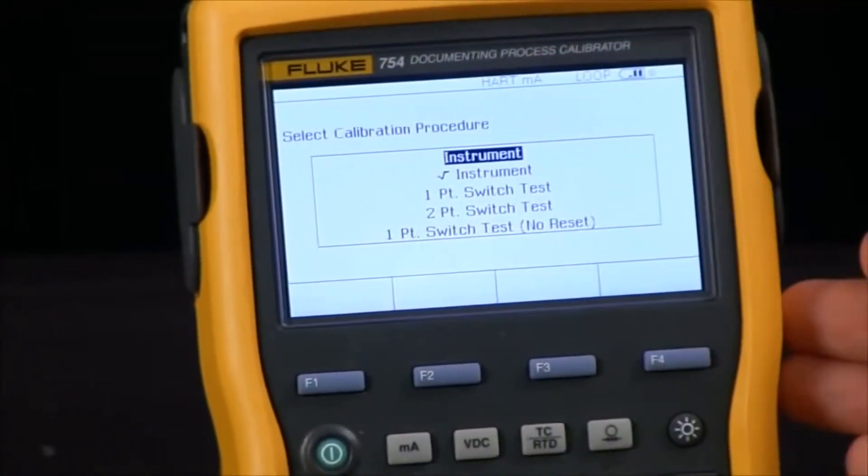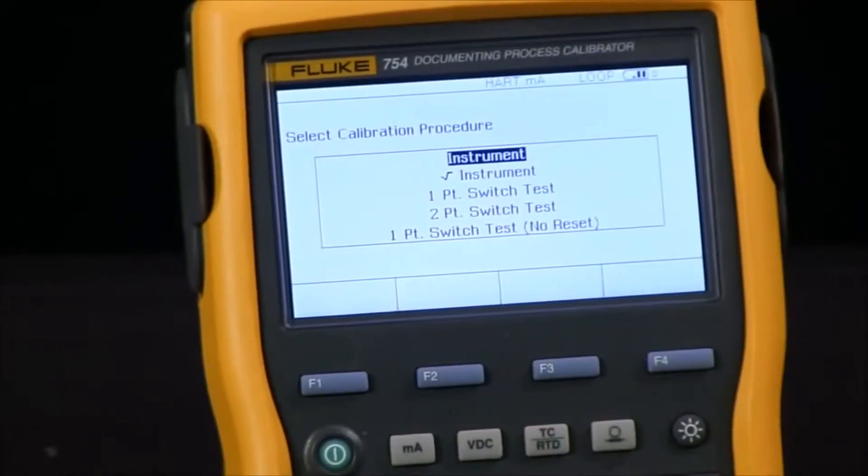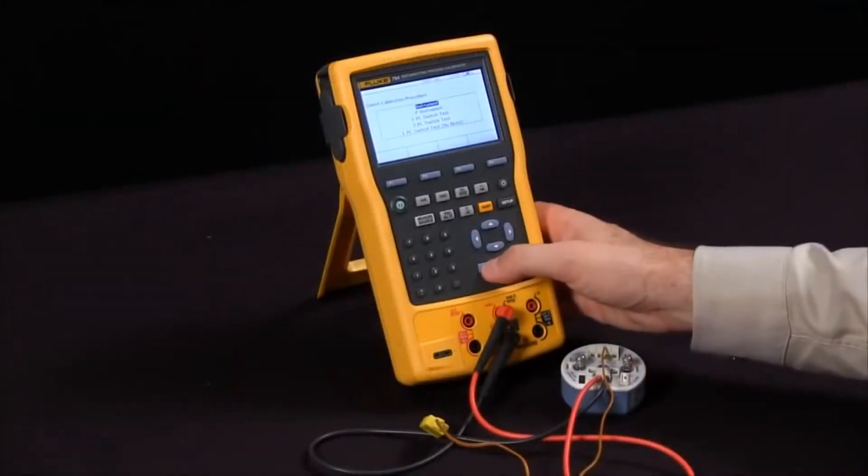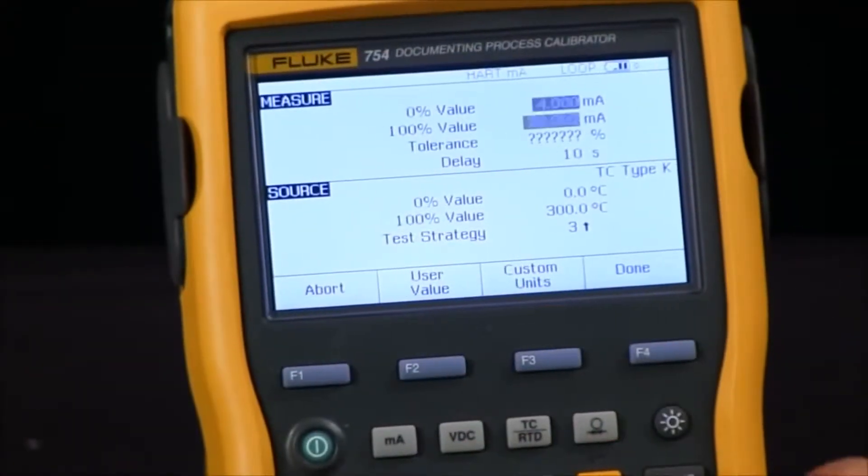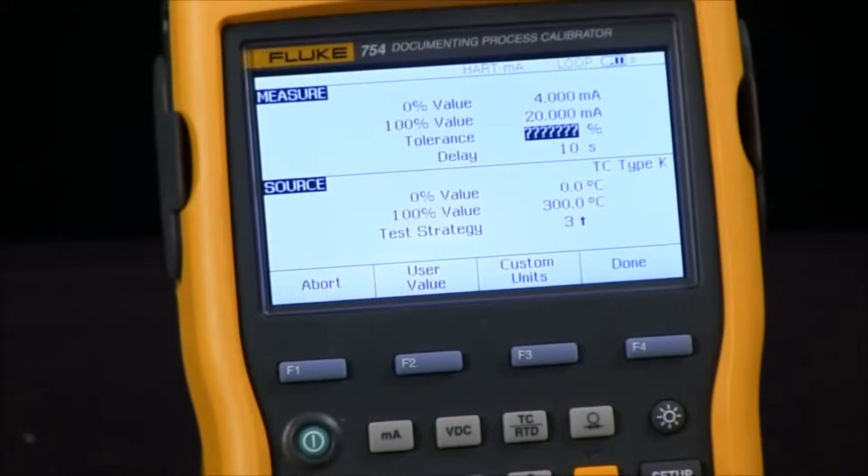If I were doing flow I could do square root instrument but since we're just focused on the temperature calibration I will select instrument. Right now my upper and lower range I'm going from 4 to 20 milliamp. I will set my tolerance to 0.3.